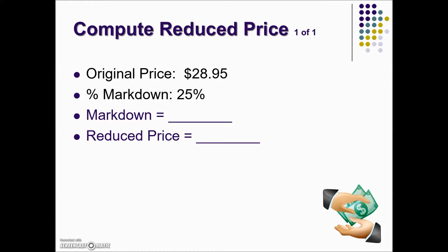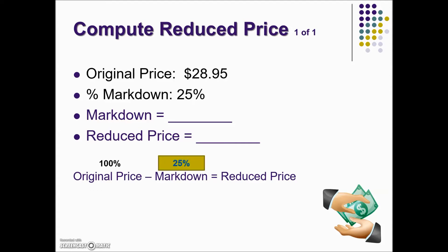In this first example, we're given an original price and the percent markdown, and they're asking us for the dollar amount of the markdown and the eventual reduced price. Using the foundation formula with the original price acting as the base, we're given a markdown of 25 percent, which means 100 percent minus 25 percent gives us a reduced price equivalent to 75 percent of the original price.